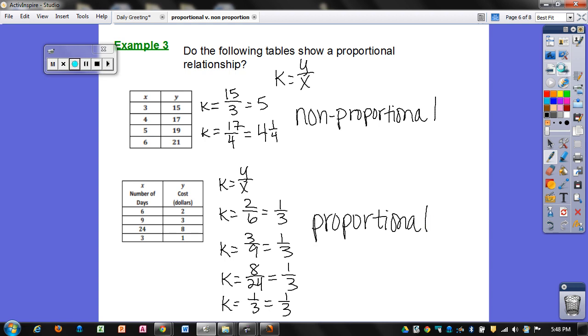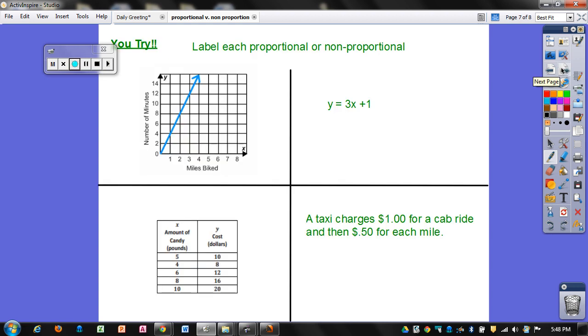And here's your U-tri. You are going to label each representation as proportional or non-proportional.